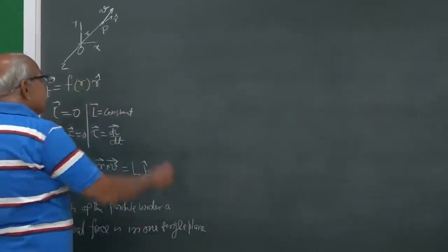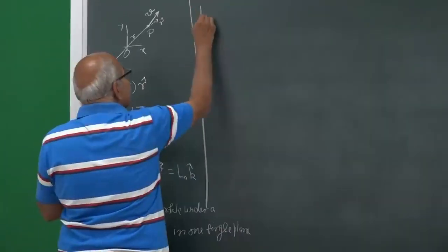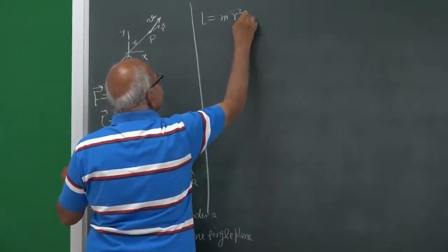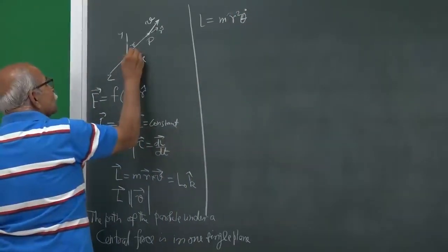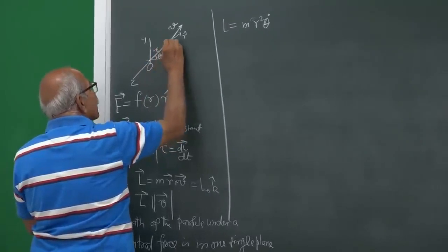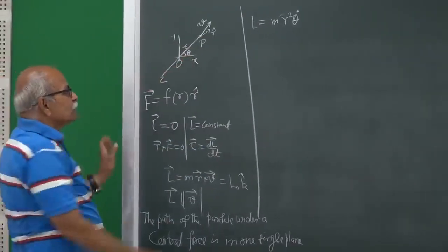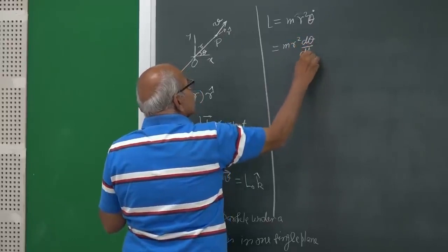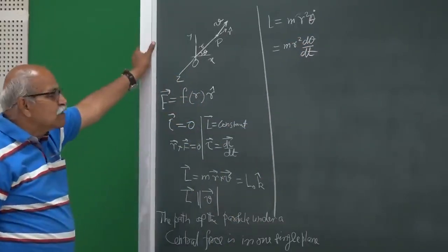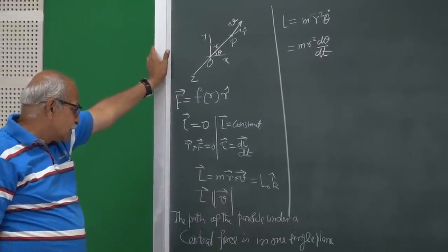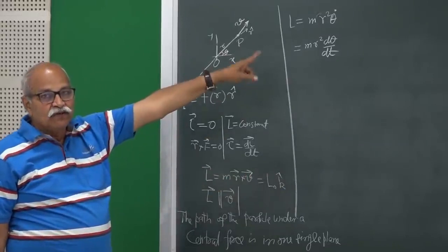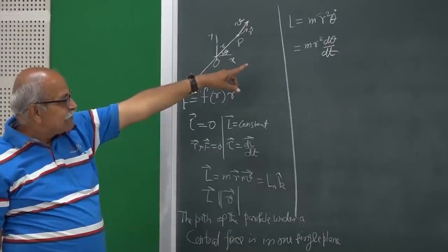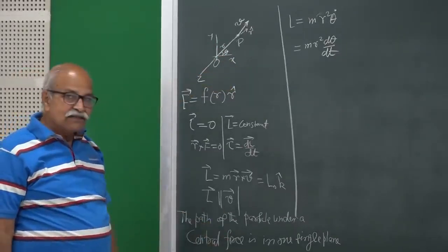The magnitude of L is m r² θ̇, where θ is the angle and r is the distance. Since L is constant, this magnitude is also constant. From this fact we can derive another important property of central force motion.